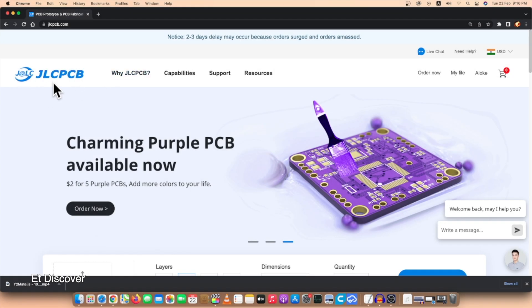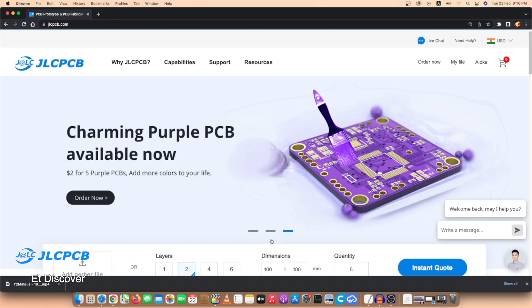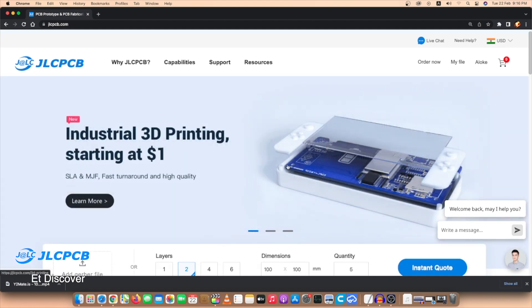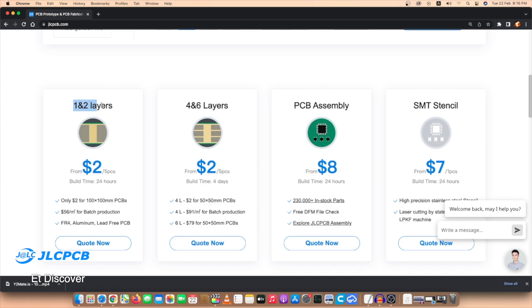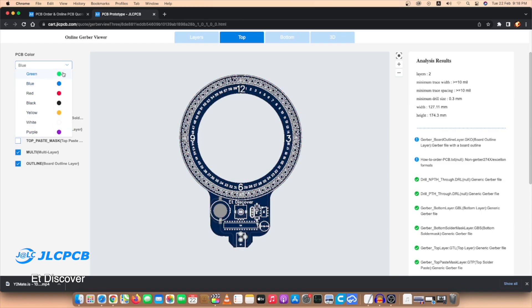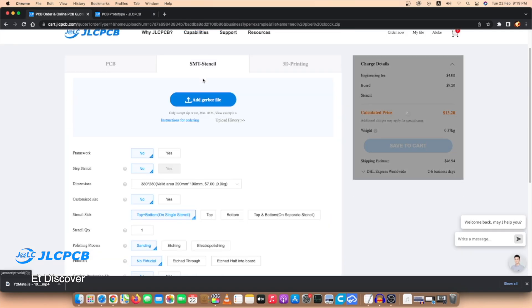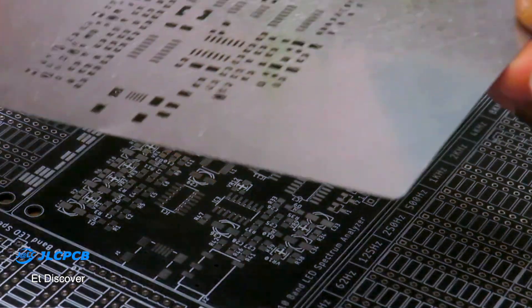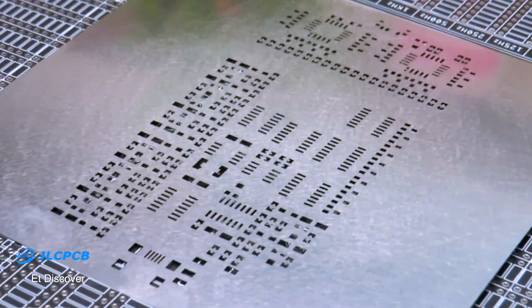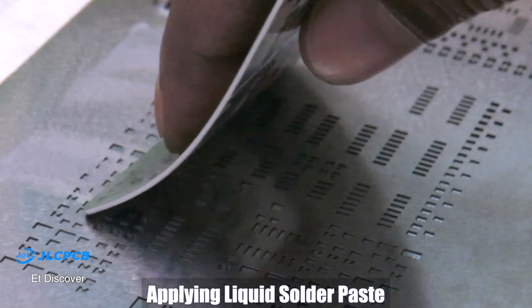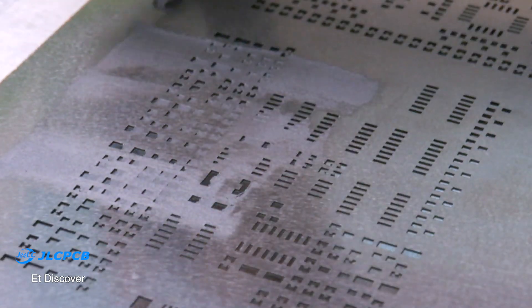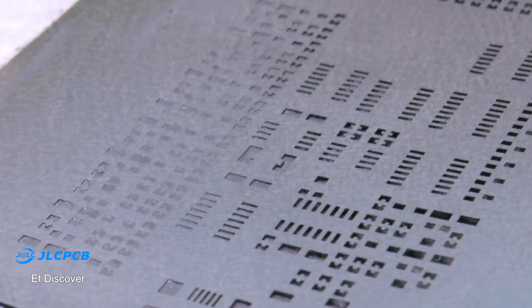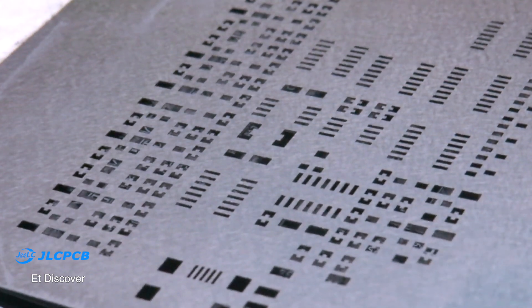This video is sponsored by JLCPCB, one of the most popular PCB making companies in China. Here you can order all kinds of two to six layer PCBs at very low prices, even in different colors, completely free. The best news is that for SMT orders, JLCPCB produces SMT stencils more accurately and precisely. You can order your SMT stencil with your PCB, and I hope you know how important SMT stencils are for SMT soldering.